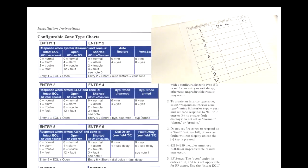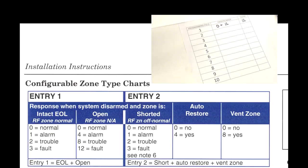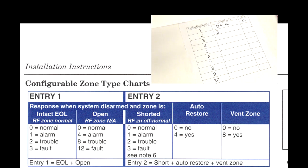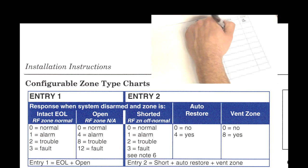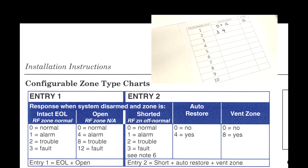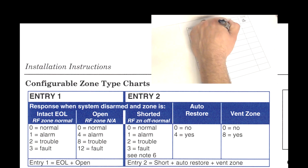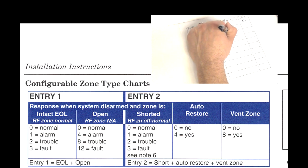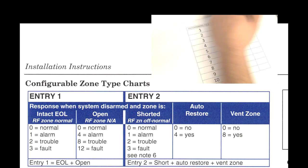Let's jump into programming field number two. First column: response when system is disarmed and zone is shorted — that should show up as a fault, so we enter a three. Next column: auto-restore — do we want this zone to auto-restore after it has been cleared of its alarm condition? Yes, so we put a four. Vent zone — this is specifically why we are programming a custom zone — yes for vent zone is an eight. So we have three plus four plus eight, giving us a total of fifteen for field two.